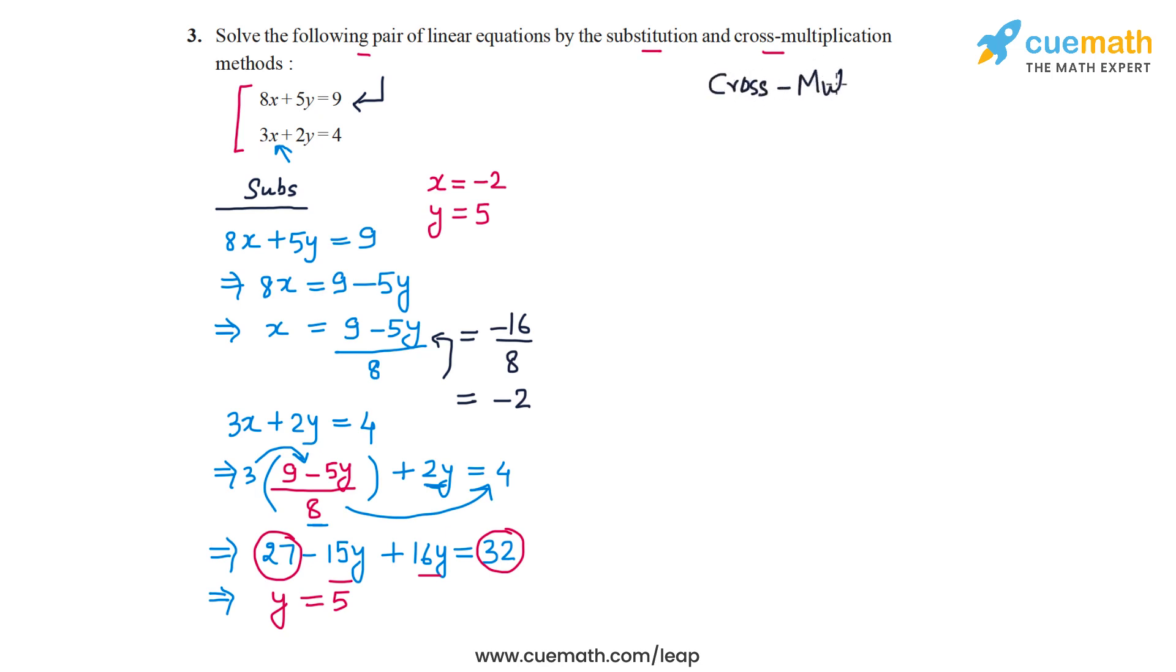So for cross multiplication, we write x, y, and 1, and then we write the coefficients. But to write the coefficients, we should write these two equations in the standard form. So in the standard form, they are 8x plus 5y minus 9 equal to 0. So I bring the constant term also to the left side. And similarly, 3x plus 2y minus 4 equal to 0.